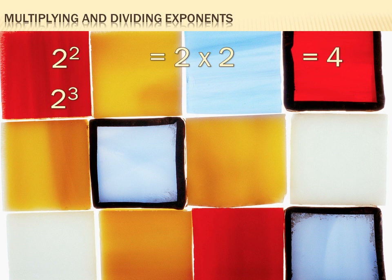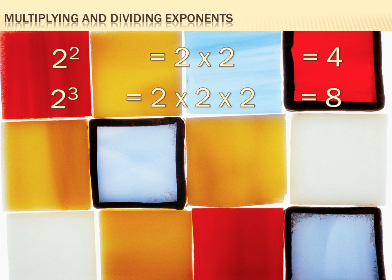What about 2 to the third power, or 2 cubed? You know what that means too — it's 2 multiplied by itself 3 times. It's 2 times 2 times 2, which equals 8.